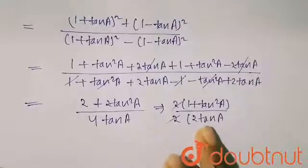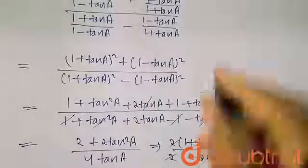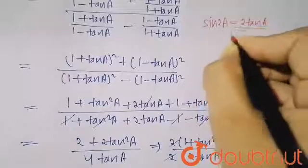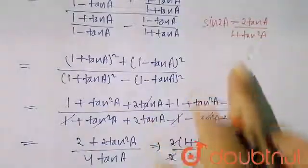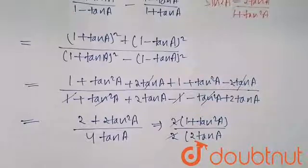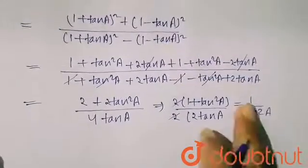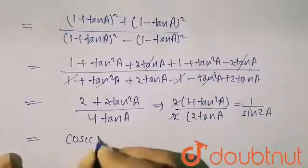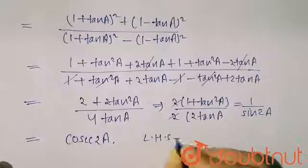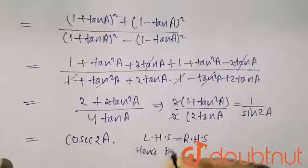Now you can see that 2 tan a upon (1 + tan²a) is the formula for sin 2a. Here, 2 tan a is in the denominator and (1 + tan²a) is in the numerator, so this is the reciprocal. Therefore I will write 1 upon sin 2a, and 1 upon sin 2a can be written as cosec 2a. This is exactly what I had to prove. So LHS equals RHS — hence proved.